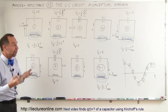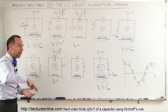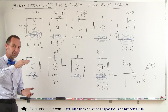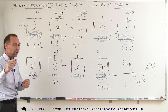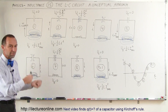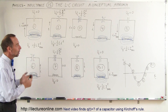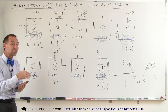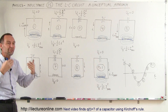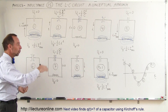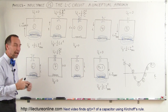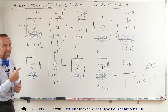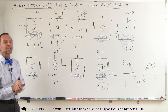An LC circuit is very much like a mass on a spring — it passes energy back and forth between the capacitor and the inductor, with the current going in one direction then the opposite direction, back and forth. That's the conceptual approach of what an LC circuit looks like. In the next video, we'll show you the equations and how they define how the current oscillates and how the charge builds up and diminishes on the capacitor over time. If you're interested in that, stay tuned for the next video.